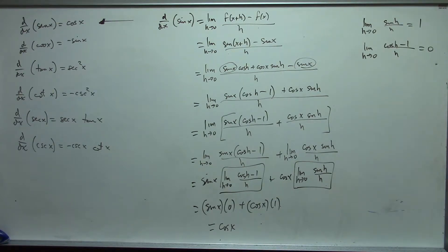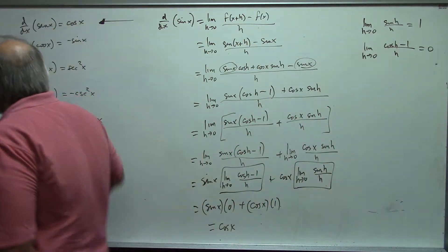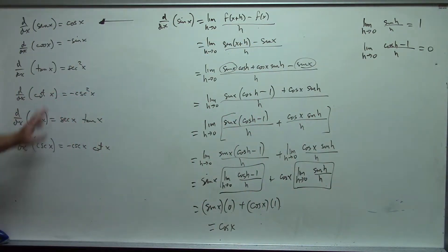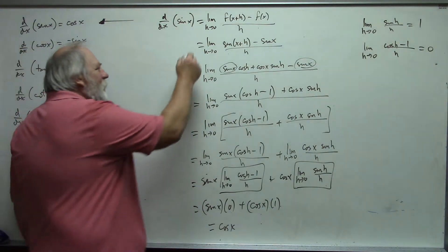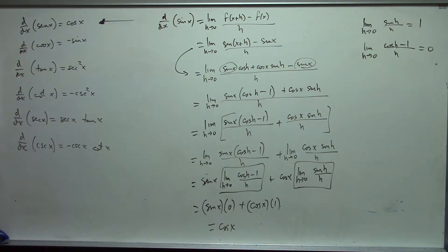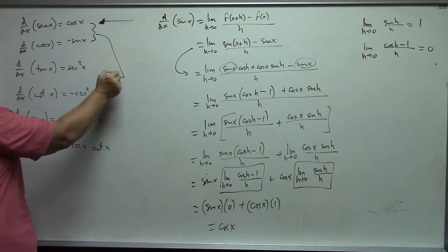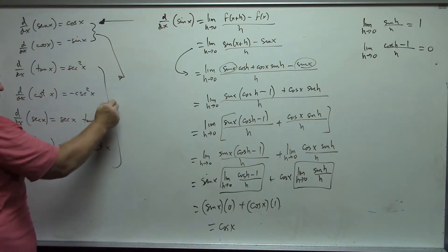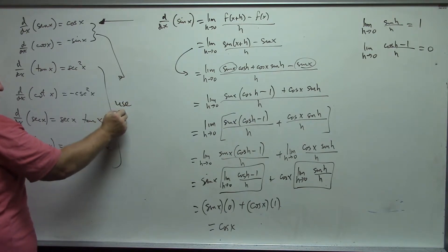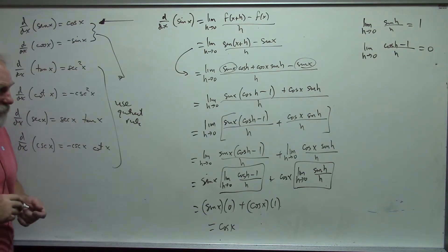That was a lot of work. The derivative of cosine of x as negative sine of x can be shown the same way — you use a different trig identity in that step, and after that the same basic algebra applies. The rest of these derivatives can be shown using the quotient rule, assuming you have sine and cosine. Use the quotient rule to get those, so they follow simply.